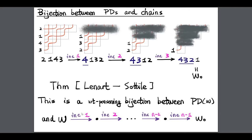There are also bijections between pipe dreams and chains. Starting from a pipe dream of 2143, if I erase the first row I get a smaller pipe dream, and continuing this process gives a sequence of permutations. Going from 2143 to 4132 uses an increasing 1-chain, then an increasing 2-chain, then an increasing 3-chain. This gives a weight-preserving bijection between pipe dreams and chains with labels 1, 2, …, n−1, exactly those chains appearing in the chain formula.